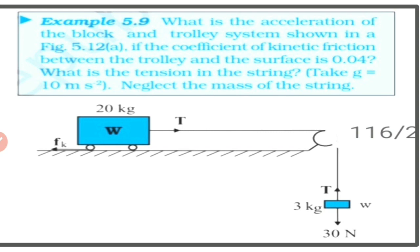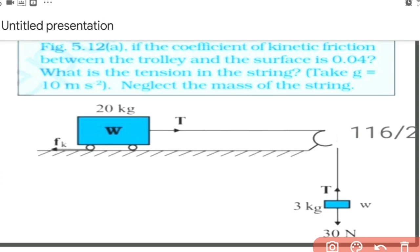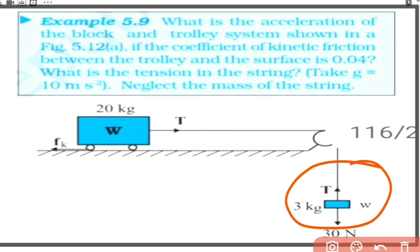We are asked to find both the tension in the string and the acceleration of the system. One object moves along the surface with friction, and the other is hung through a pulley. First, consider the hanging object: the forces acting on it are its weight of 30 Newton acting vertically down and tension T acting vertically up along the string toward the point of suspension.